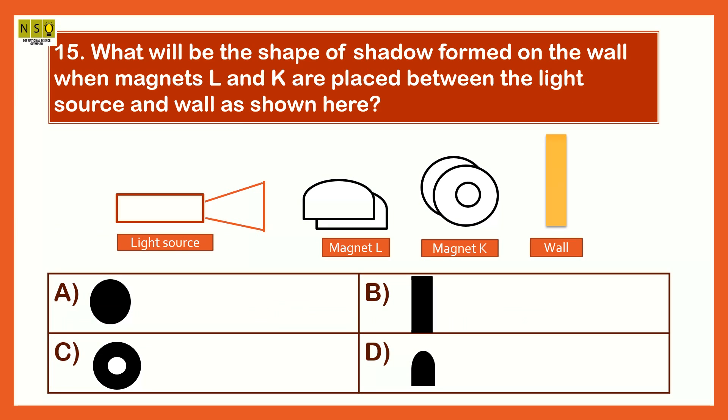What will be the shape of shadow formed on the wall when magnets L and K are placed between the light source and wall as shown here? The shape of the shadow formed will be option B, a rectangle.